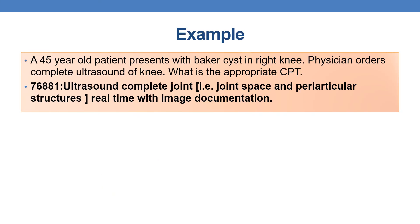Let us discuss an example. A 45-year-old patient presents with a Baker cyst in the right knee. The physician orders a complete ultrasound of the knee. The appropriate code is 76881 — complete joint evaluation: ultrasound complete joint, joint space, periarticular structures, real time with image documentation. By this, we complete the CPT codes for extremities.